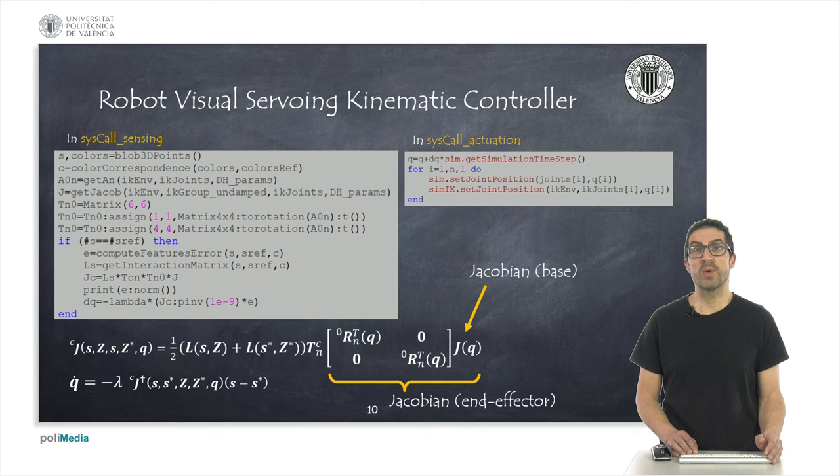particularly if we are able to solve the correspondence problem. In the syscollactuation function, we can implement the integrator that will allow us to determine the new positions of the joints that the robot must have on their velocities.